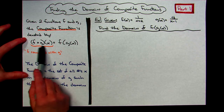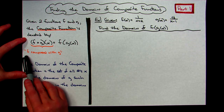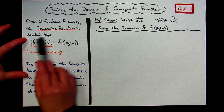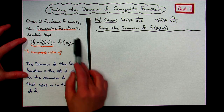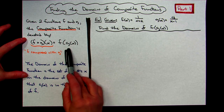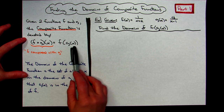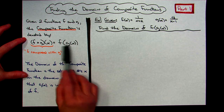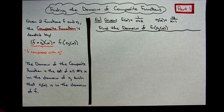Over here on the left, if you're going to read that the correct way, you're going to say 'f is composed with g.' This over here I generally read more along the lines of function notation: f of g of x. Most of the time, my preference would be this notation right here.